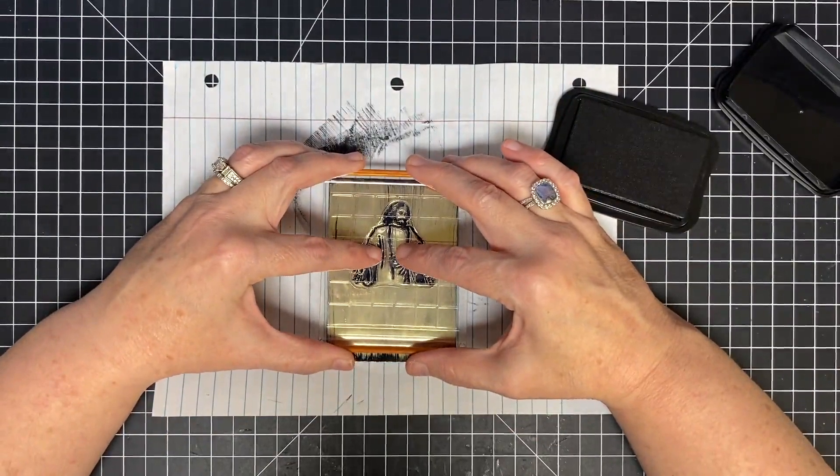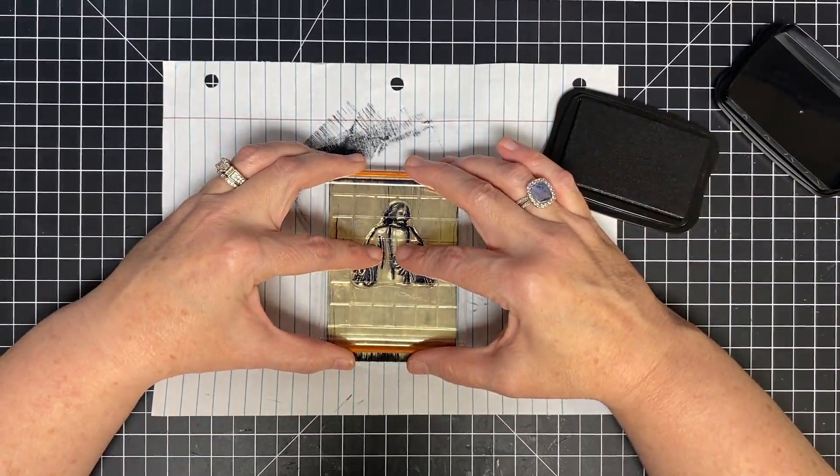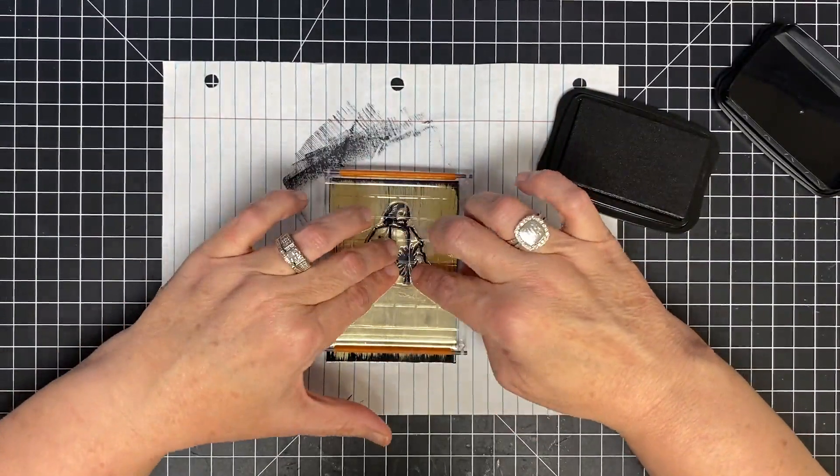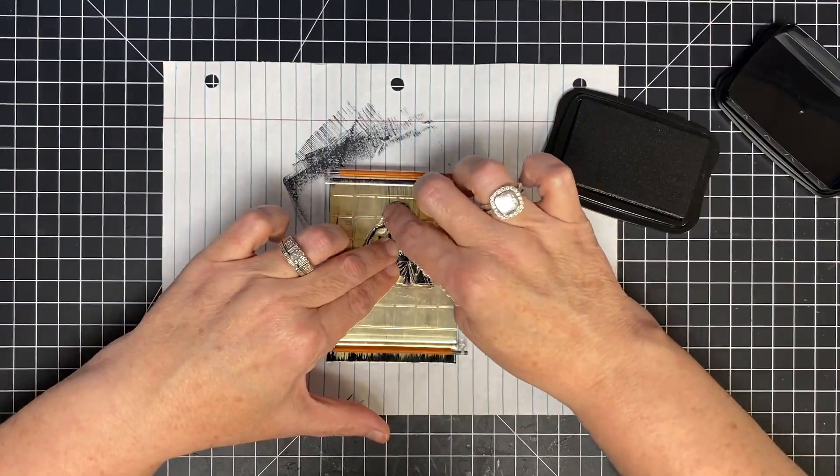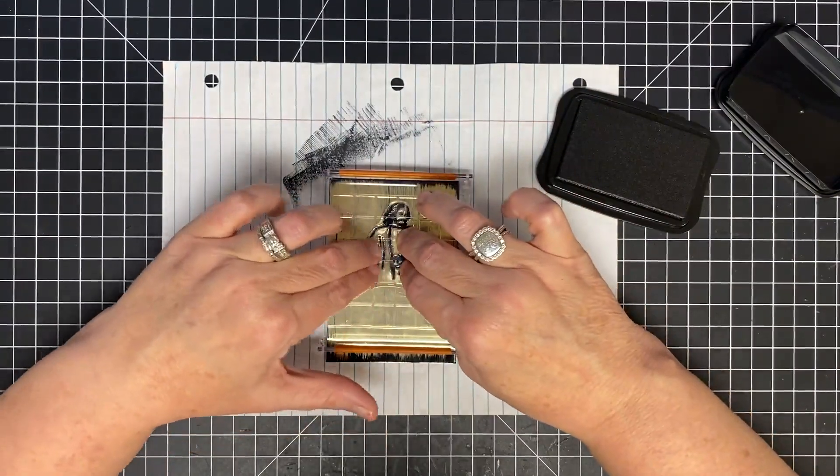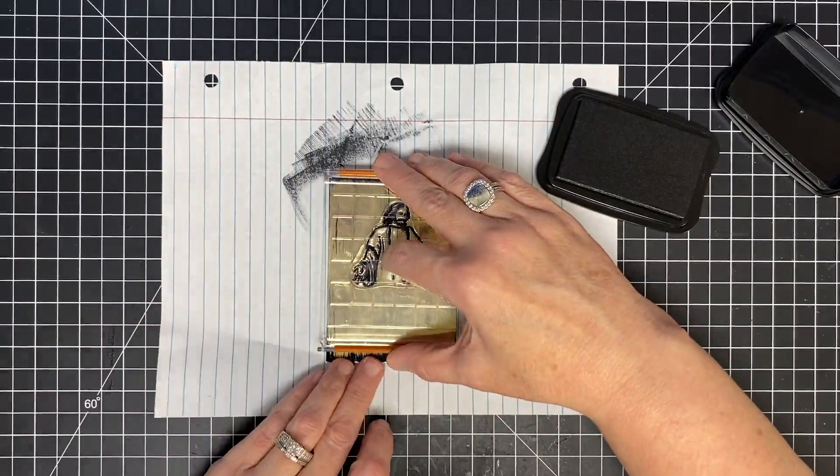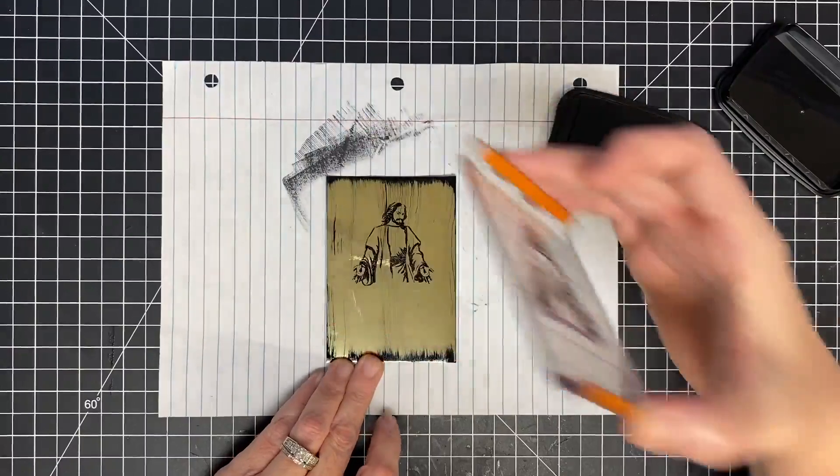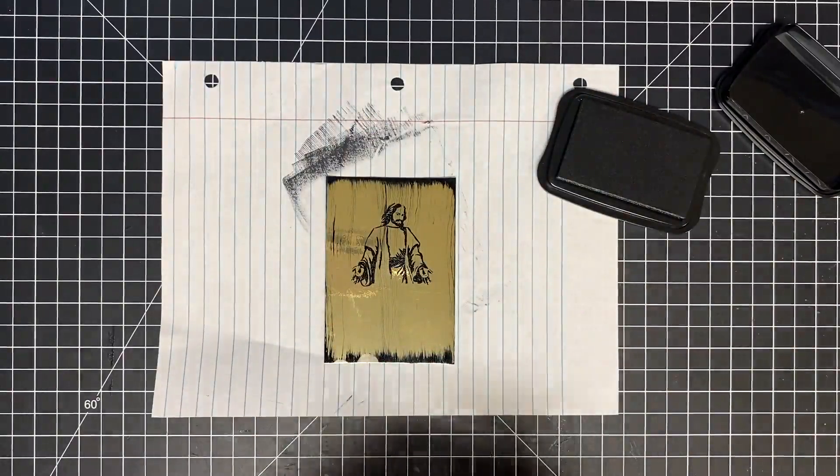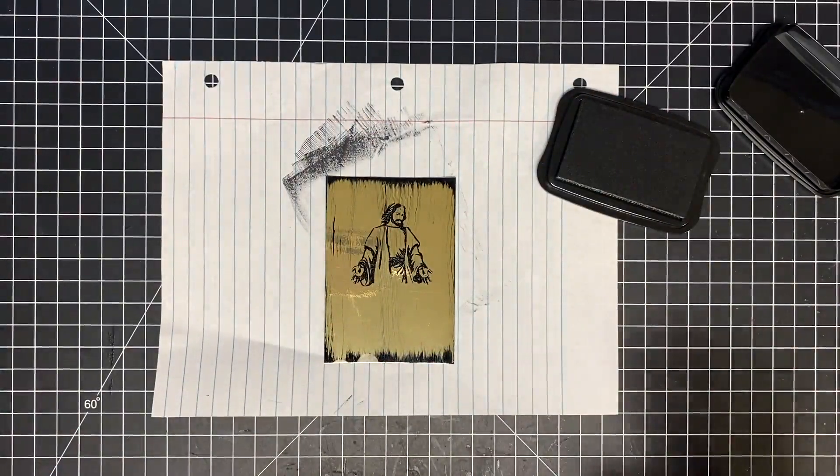Now remember, this is foil, and this is a wet ink, so you can't twist. You want to sit that down and let it transfer. Give it light pressure all over the stamp, but don't twist because you'll get a shadow or a halo. Now we'll lift that up, and the beauty of this is if it's not a perfect image, that's really okay. It'll still be pretty like this.